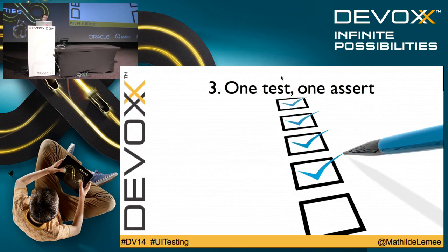The next rule is maybe a little extreme: one test, one assert. It's extreme, but it's really the way to go. In a lot of tests, the developer has a lot of things in mind — they go to page A, do a test, go to page B, do a test, all in the same method. That's not good because when you get a failure, you don't know why. In unit, integration, and Selenium testing too, you really have to have only one thing in mind when you test.